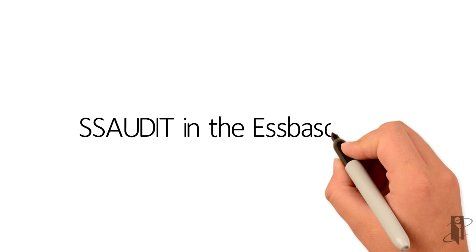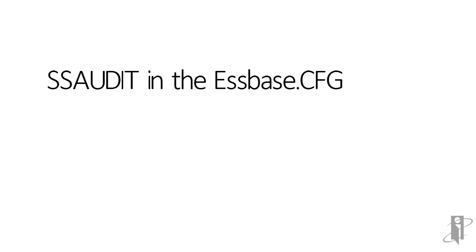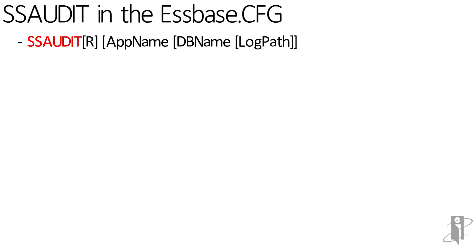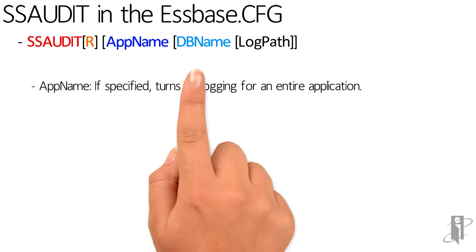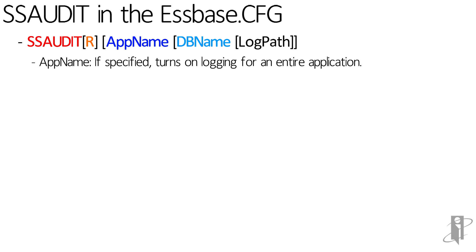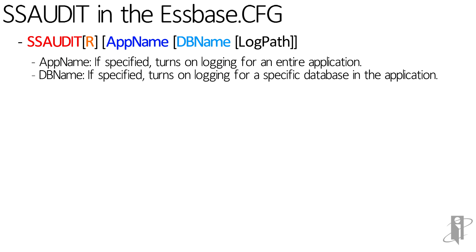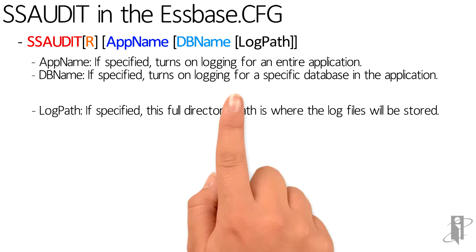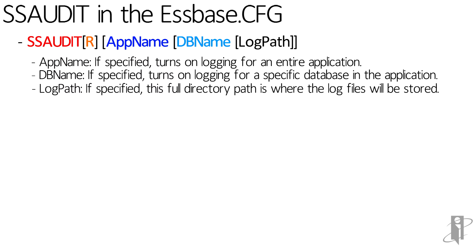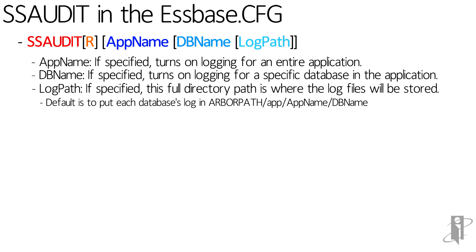Syntax for the SS Audit command is pretty straightforward. You say SS Audit — and we'll explain that letter R in just a second — and then if you wanted to operate on a specific application, you list the application name. If you wanted to operate on a specific database within that application, you list that. And if you want to change the default log path, you can.